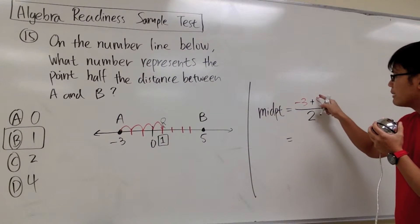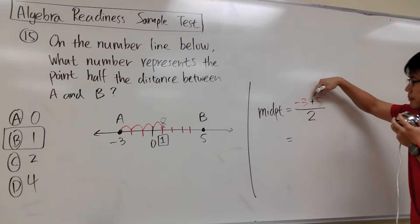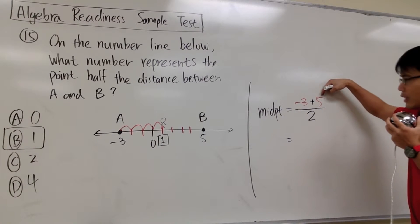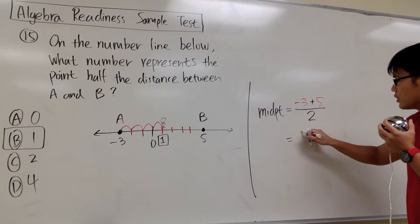In this case, we will have to work out the top first. Negative 3 plus 5, that would be what? The answer to that would be positive 2. So work that out.